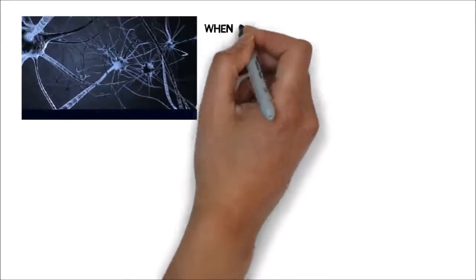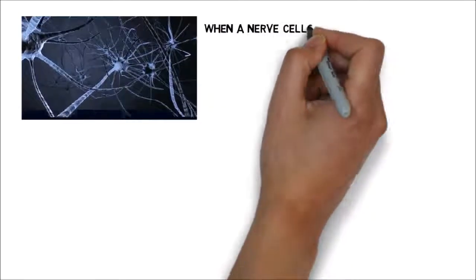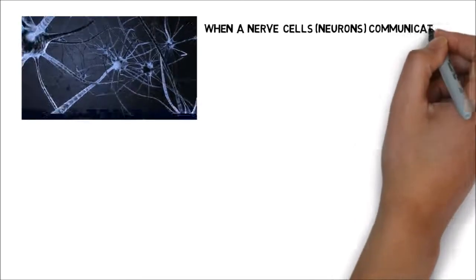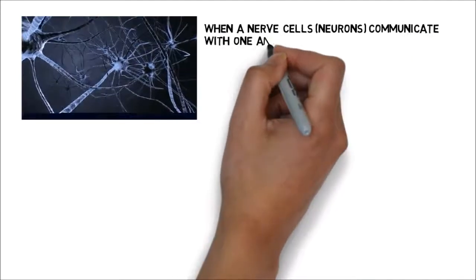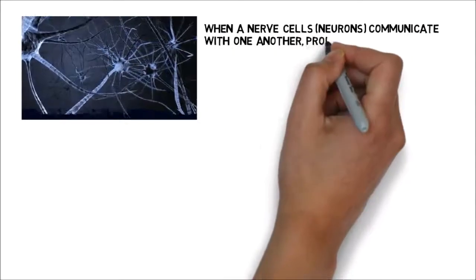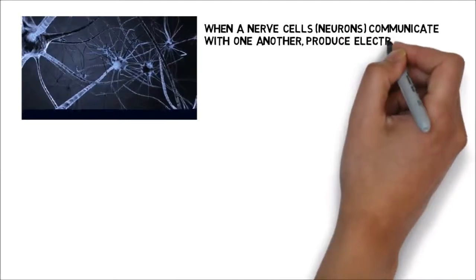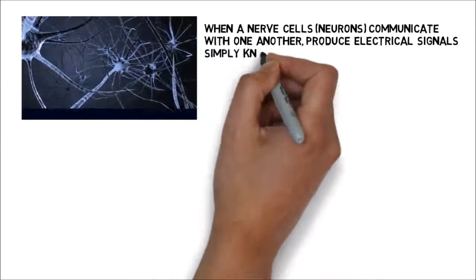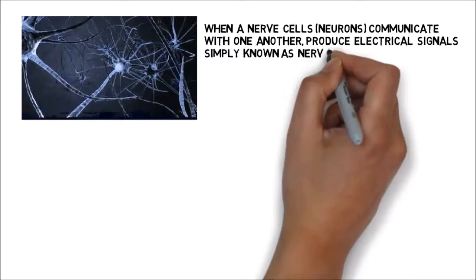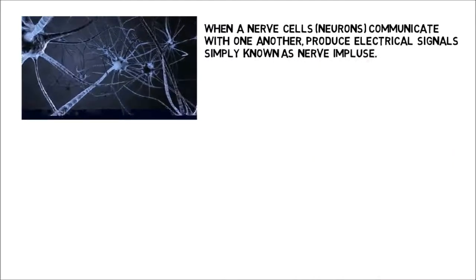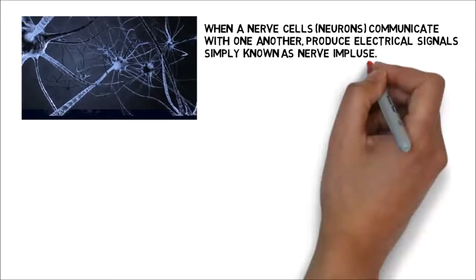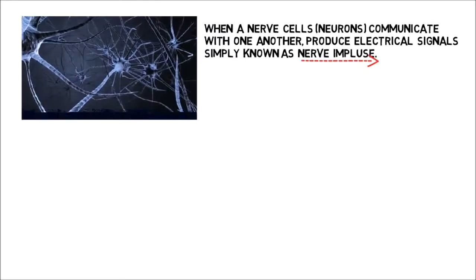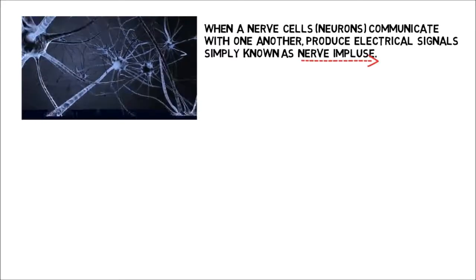When nerve cells, neurons, communicate with one another, they produce electrical signals, simply known as nerve impulses. Nerve impulse is an energy change in the neuron. This occurs when a neuron is stimulated. The messages carried by neurons are called nerve impulses. Nerve impulses can travel very quickly because they are electrical impulses.